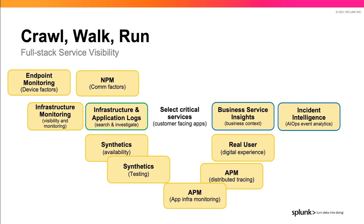Surrounding all this are our customer-facing apps — customers in the sense of being either external or internal. They are driven by synthetics monitoring, which covers not only availability but testing. We spend a lot of time saying something's wrong, but do you even know it ever worked correctly in the first place? Synthetics gives us that capability. We use synthetics where we know what the results should be to test against and set appropriate baselines. The nice thing is you're getting a standard answer — you know what the behaviors are — and that should fit directly into your alerting structure so that when something is out of the ordinary, it gets flagged.